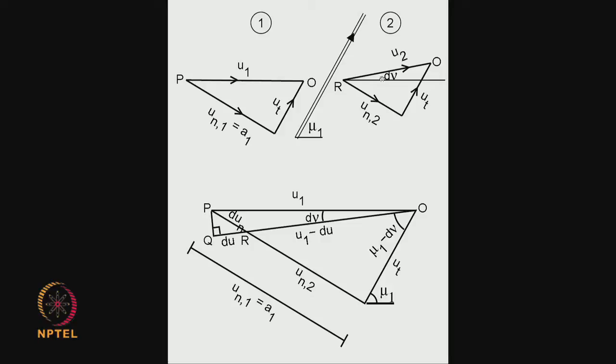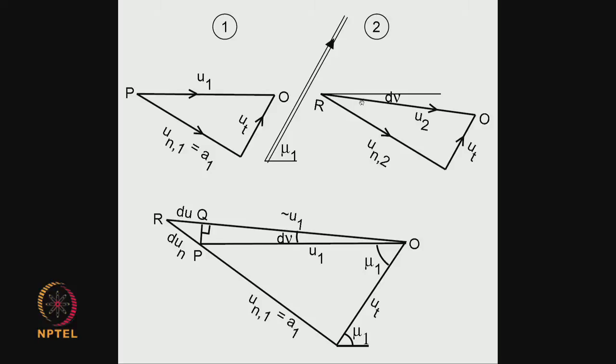In the last class, we looked at the combined velocity triangles for Prandtl-Meyer expansion. The combined velocity triangle for a compressive wave solution shows that the flow after passing through the wave is deflected towards the wave. For the expansive solution, the velocity vector after passing through the wave is deflected away from the wave. Based on these two triangles, we derived some relationships.